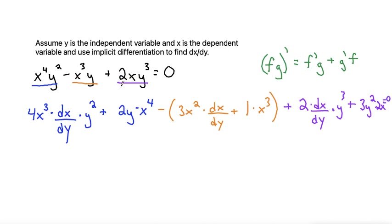All right, so now we have taken the derivative. Let's go ahead and distribute and simplify a little bit to make things easier to look at. So I'll write this as 4X cubed Y squared dx/dy, and then this is plus 2X to the fourth Y.